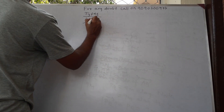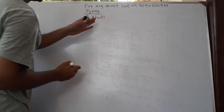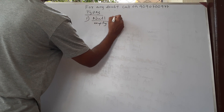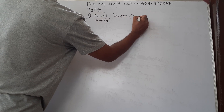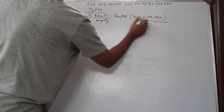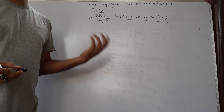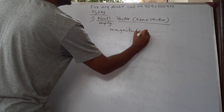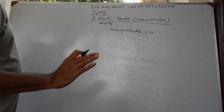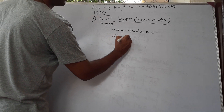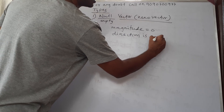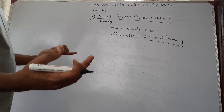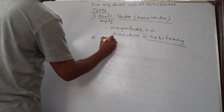The first type is the null vector. You may have heard the word 'null' from mathematics — null means empty. A null vector is sometimes also called a zero vector. When we represent a vector quantity we talk about its magnitude and direction. A null vector is a vector whose magnitude is zero and whose direction is arbitrary.